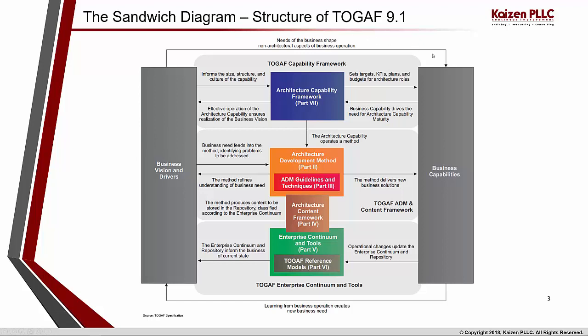Every organization has certain drivers that move it from one level to another. Once those are realized successfully, the organization achieves its business capabilities. A capability describes a unique, collective ability that can be applied to achieve a specific outcome. A capability model describes a complete set of capabilities, which can be defined at different levels — high level or lower levels. Examples include products, sales, marketing, customer service, finance, regulatory, pricing, and risk.